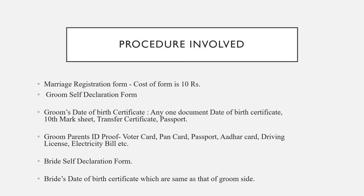Now we will talk about the process of marriage registration. The process is very simple. First of all, you have to purchase a marriage registration form. Generally the cost of this form is 10 rupees, but this varies state to state. After this, the groom has to submit a self-declaration form. For date of birth proof, the groom submits a date of birth certificate, 10th mark sheet, PAN card, or passport.